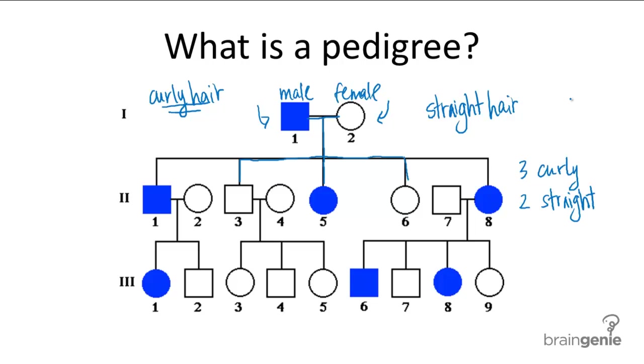And then these offspring grow up to have children of their own, and we see again three grandchildren that have curly hair and six grandchildren that have straight hair. So this is all represented by the colored in individuals versus the not colored in individuals.